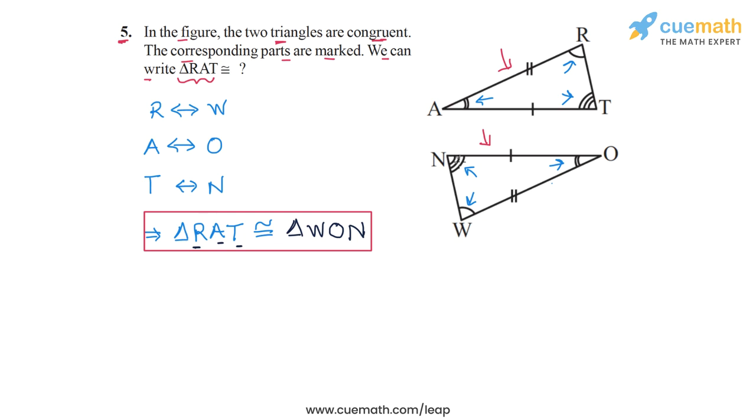So let me show you what I mean. So let me take this triangle NOW or WON, and let me make a copy of this triangle. And now I will try and rotate this triangle, so that its orientation matches the orientation of triangle RAT.